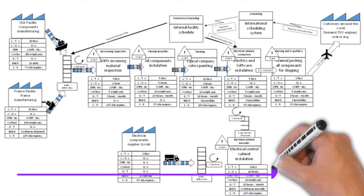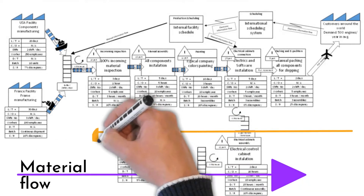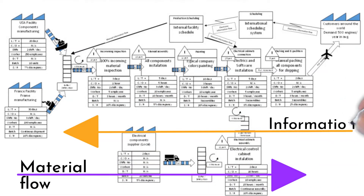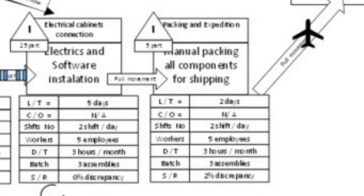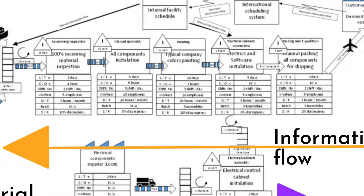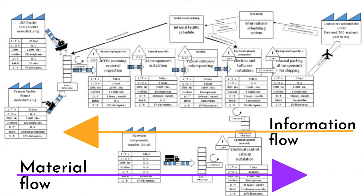Material flow is usually drawn from left to right, and information flow from right to left. Use different colors for each for better visualization. Under each cell representing an operation, fill in describing information such as cycle time, change over time, number of shifts or working time, number of people per shift or operation, downtime or uptime, batch or pack sizes, scrap rate, and so on. Choose information that fits your needs, use whatever units fit for you, but stay unified across all processes.